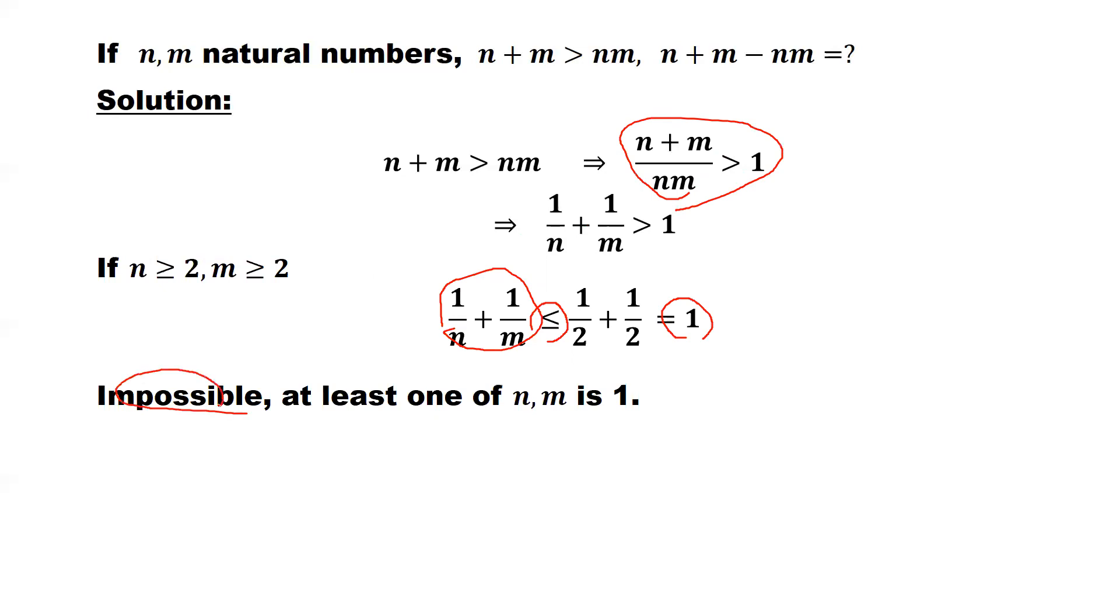Impossible, what does that mean? Both numbers cannot be bigger than or equal to 2 at the same time. At least one of those two numbers is 1. Natural numbers include 1.